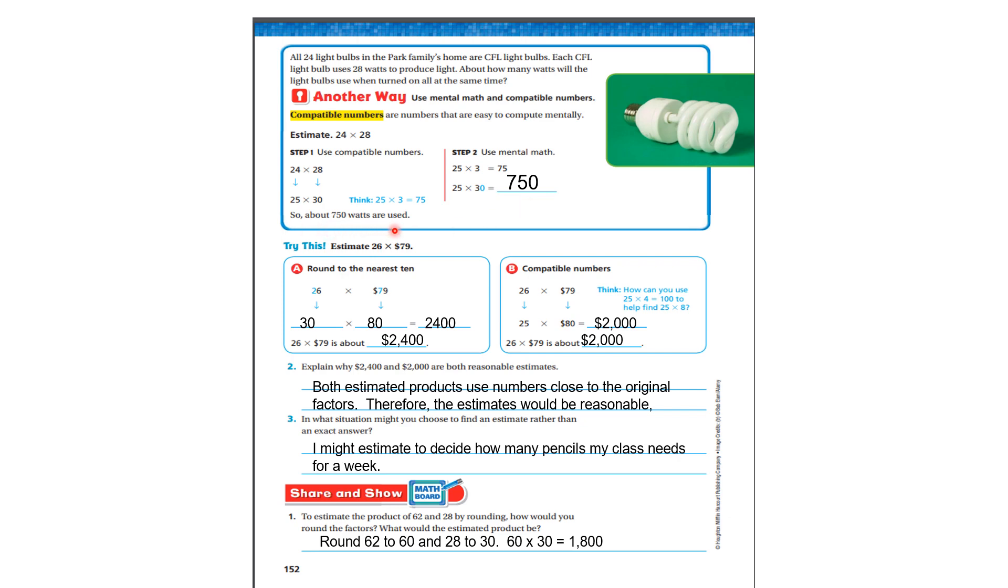Now, it says try this. Estimate 26 times 79. Round to the nearest 10. 26 can be rounded to 30. 79 can be rounded to 80. I want you to take the 3 times the 8 is 24. Add the 0s at the end. We have 2,400. So 26 times 79 is about 2,400. That was rounding to the nearest 10.